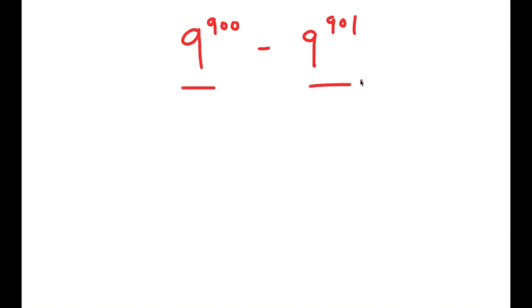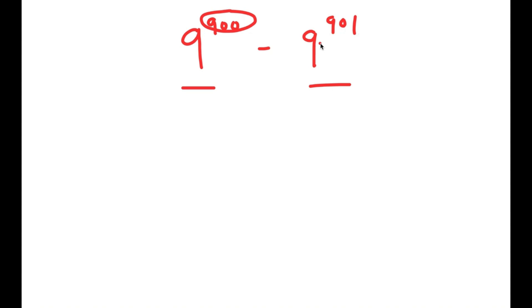We have 9 to the power of 900 and 9 to the power of 901, and these two terms are pretty similar except that the exponent for 9^900 is one less than the exponent for 9^901. The easiest way to solve this is to simplify as much as we can, and a way to do that is to factor out a term.